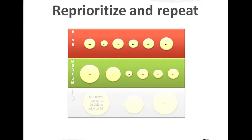We continuously repeat this process. I'm using a simplified three-level prioritization method: you divide and conquer, throw away the end of the backlog, continue upwards, and add more and more details.